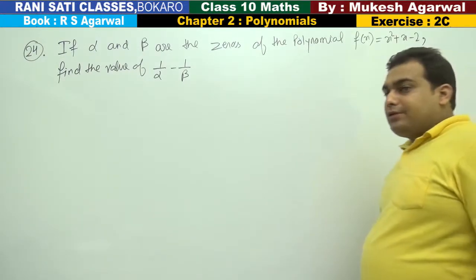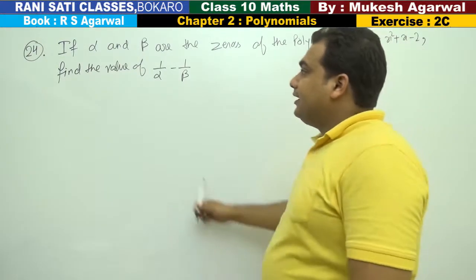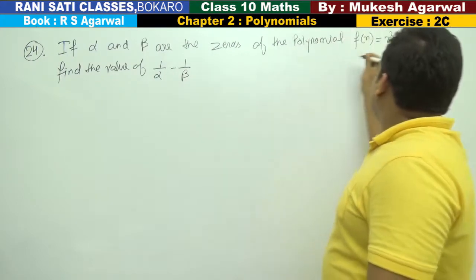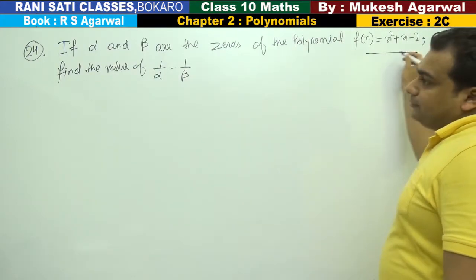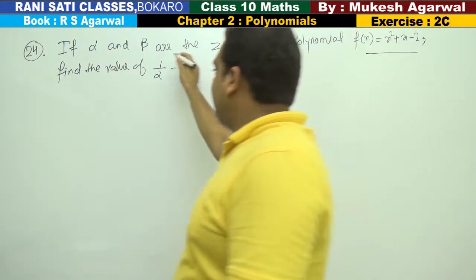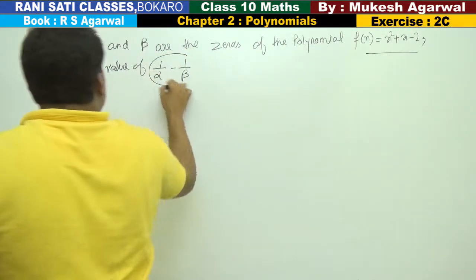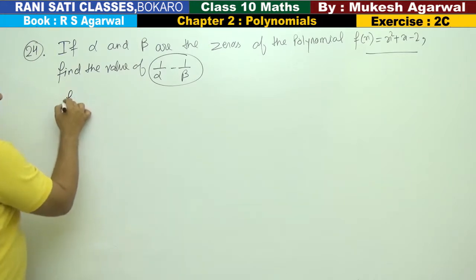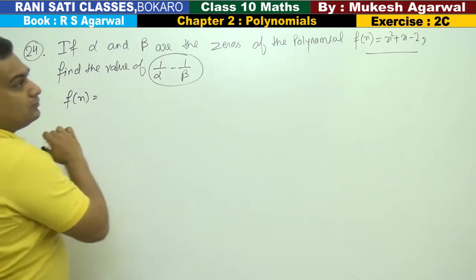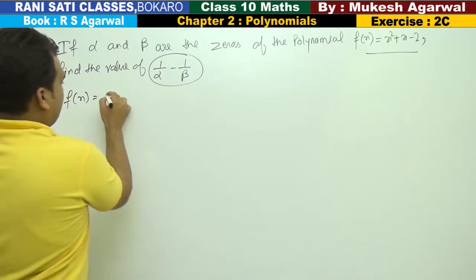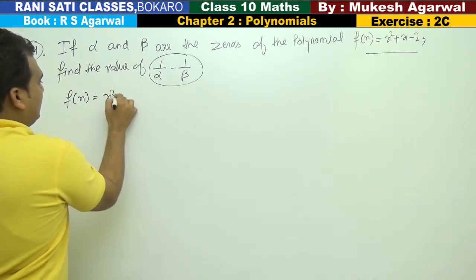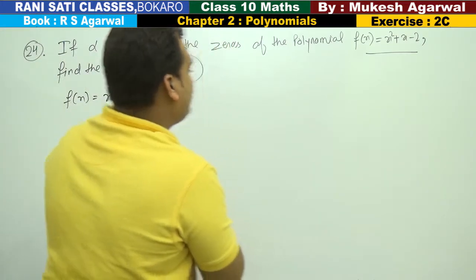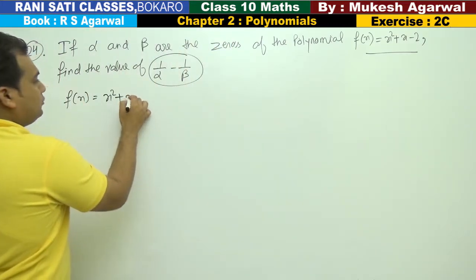Question number 24. If alpha and beta are the zeros of this polynomial, find the value of this expression. Here f(x) equals x squared plus x minus 2.